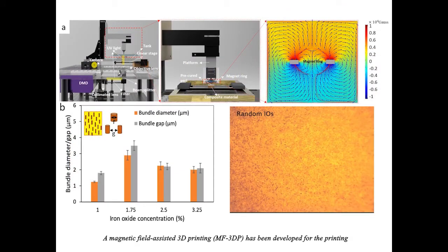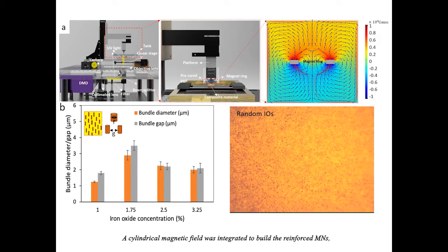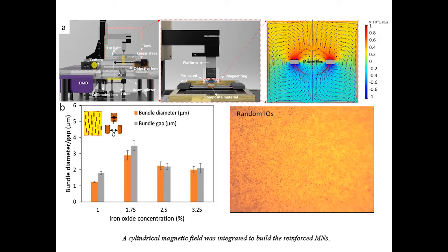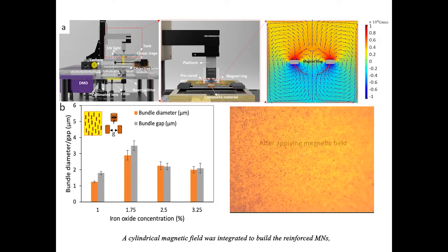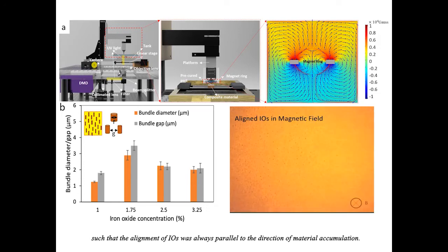A magnetic field assisted 3D printing, MF3DP, has been developed for the printing of bio-inspired microneedle arrays. A cylindrical magnetic field was integrated to build the reinforced microneedles, such that the alignment of IOs was always parallel to the direction of material accumulation.